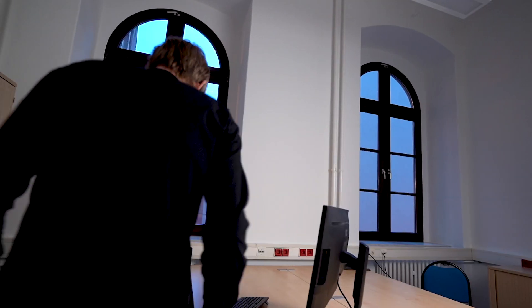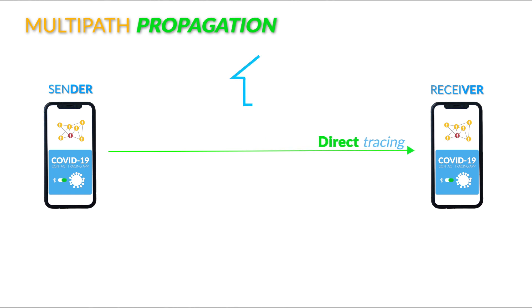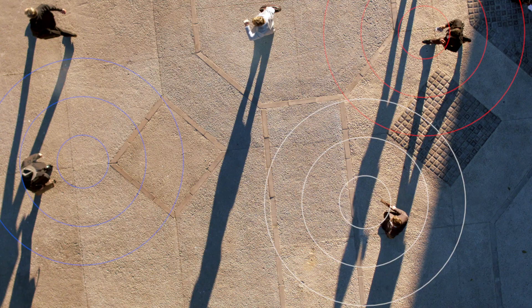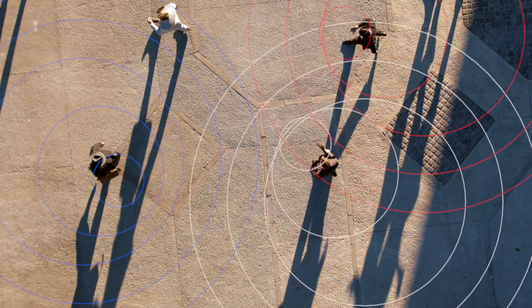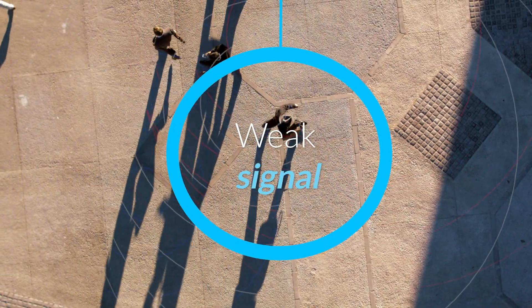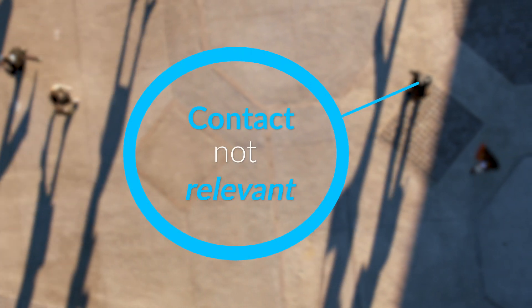The second limitation is related to distance estimation and it can suffer from multipath propagation. If there is an object in between two smartphones, this object may attenuate the signal — in particular a human body. Then the signal arrives at the receiver weaker, the distance that is estimated is larger than in reality, and then you consider the contact as not relevant.